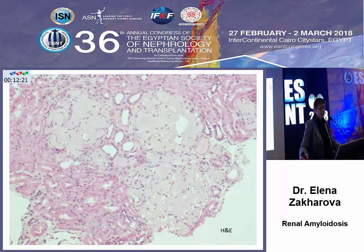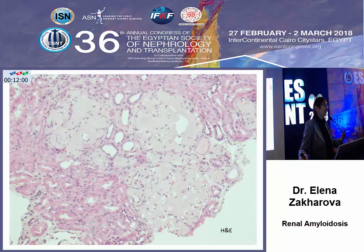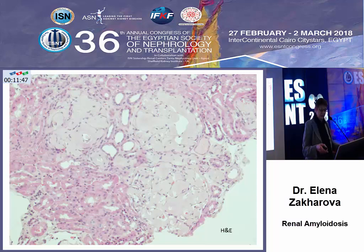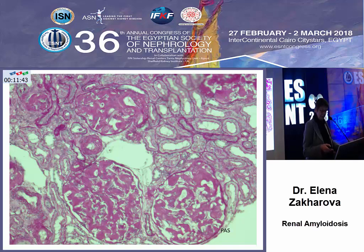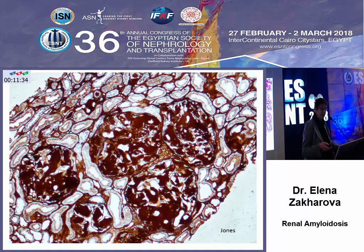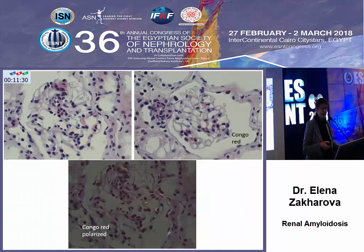Now I'm moving to some illustrations of AL renal amyloidosis. When you diagnose a patient with severe nephrotic syndrome and impaired kidney function, and your pathologist sends you a picture like this, there is definitely no doubt — this is hematoxylin and eosin and this is the first presentation of renal amyloidosis seen by pathologists: a lot of eosinophilic, non-cellular masses in the glomeruli. The same can be seen by PAS staining. When pathologists see such a pattern, they suspect amyloidosis, and the same applies to Jones silver staining — they then perform Congo red staining and evaluation in polarized light.